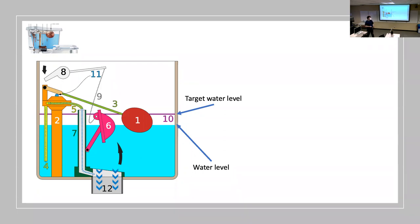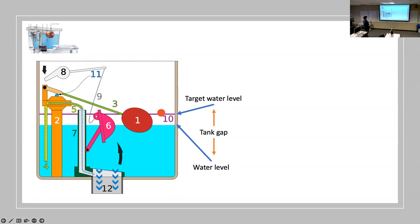Effectively, what the float is doing with this device is creating a tank gap — it's saying: what is the gap between reality and what we want? It always wants the target water level in the back of the tank, measures reality, and then uses a balancing feedback loop to drive water into the tank to bring the water level up.